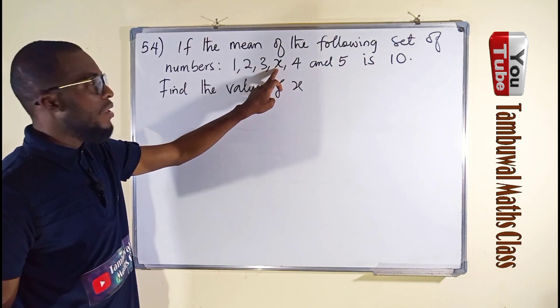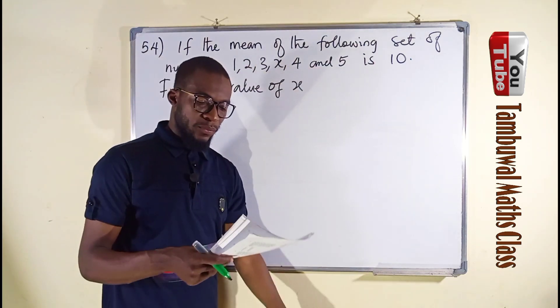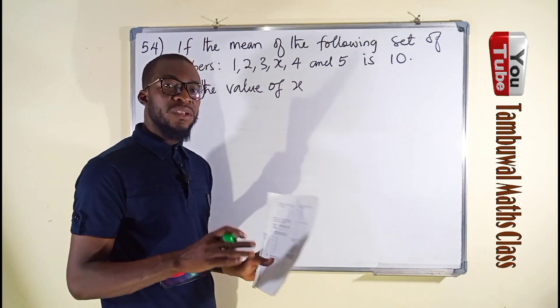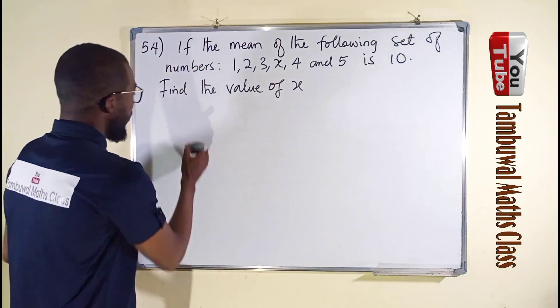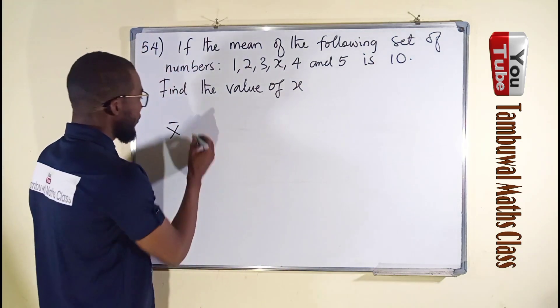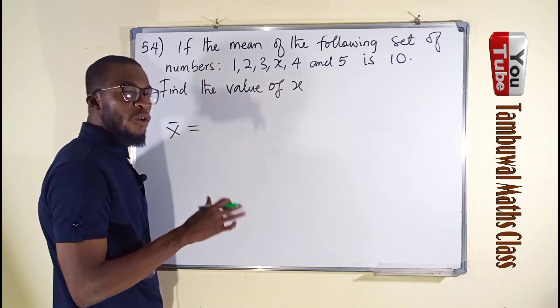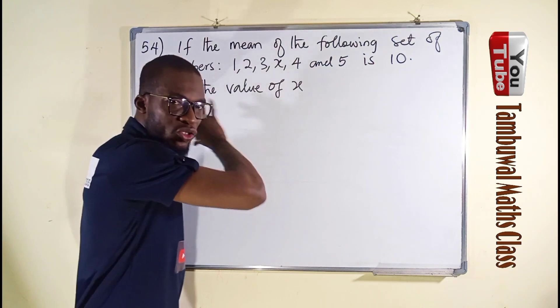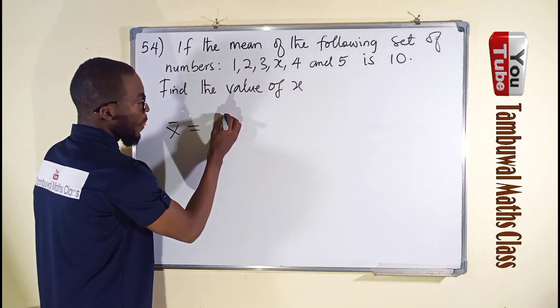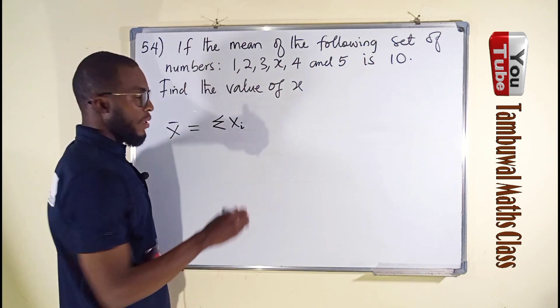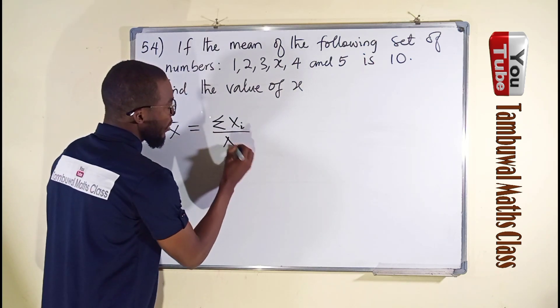You see we have x among the set of numbers. This is not a group data, and hence we are going to treat it differently. x bar for ungrouped data is equal to sum of all the items. You see we have them, 1, 2, 3, 4, 5. We are going to sum them all. Sum of all the items divided by the number of items.